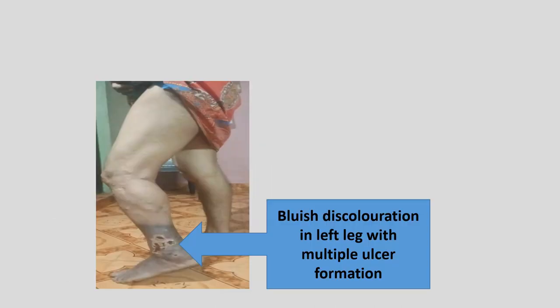The images of the lower limb of the patient show bluish discoloration in the left leg in the distal part with multiple ulcer formation.